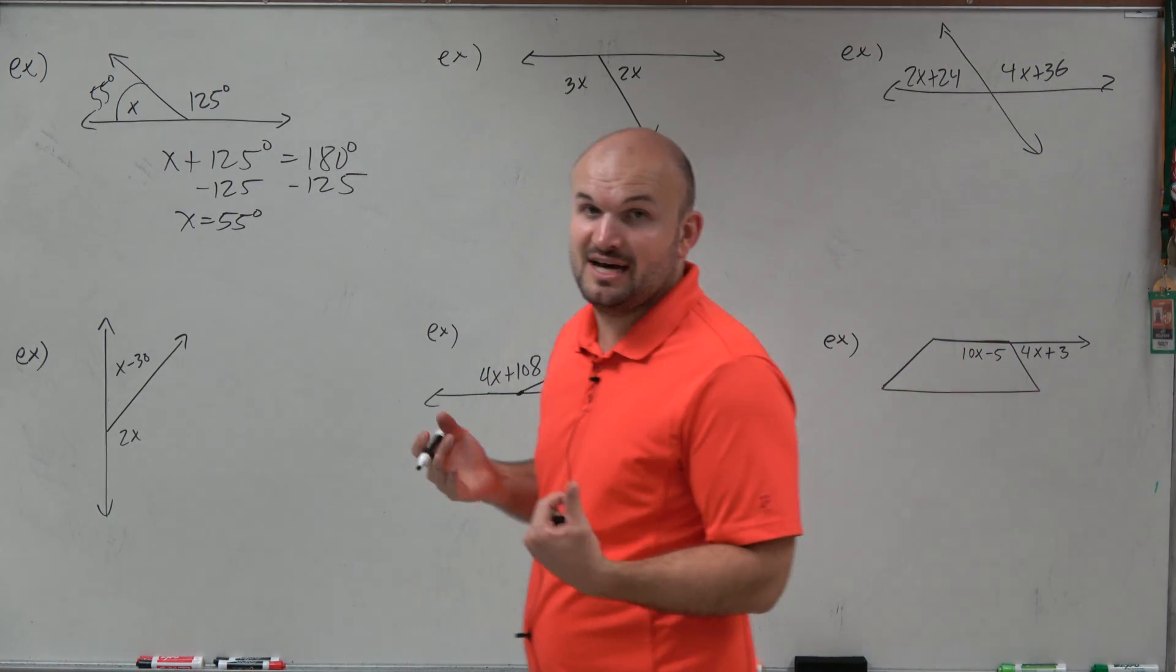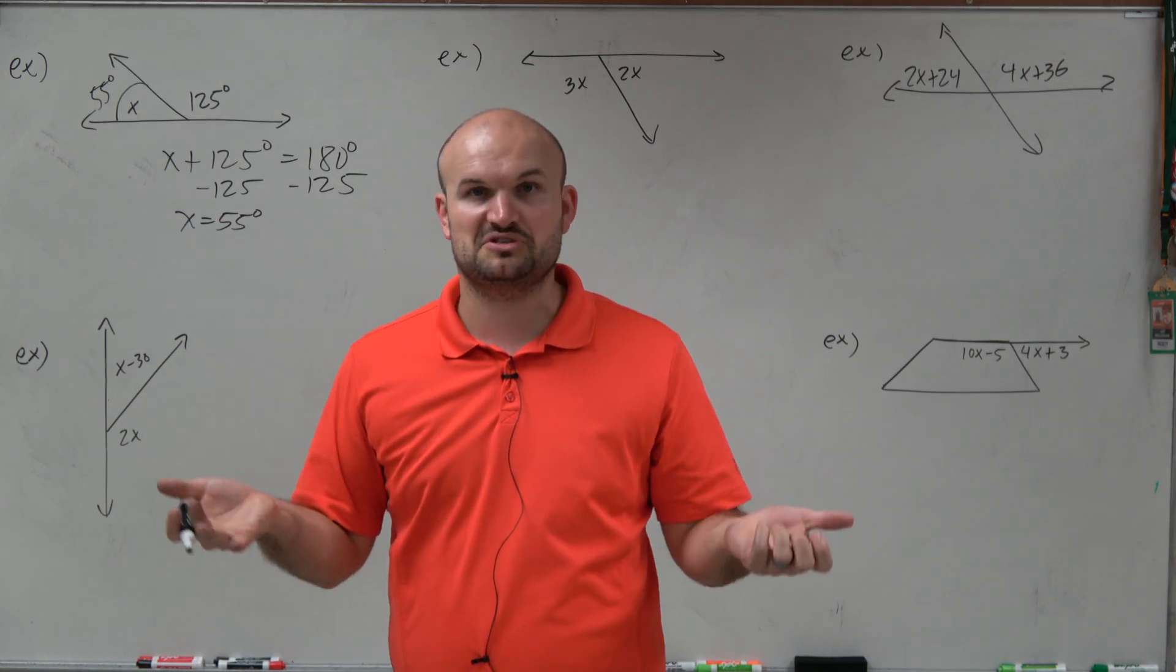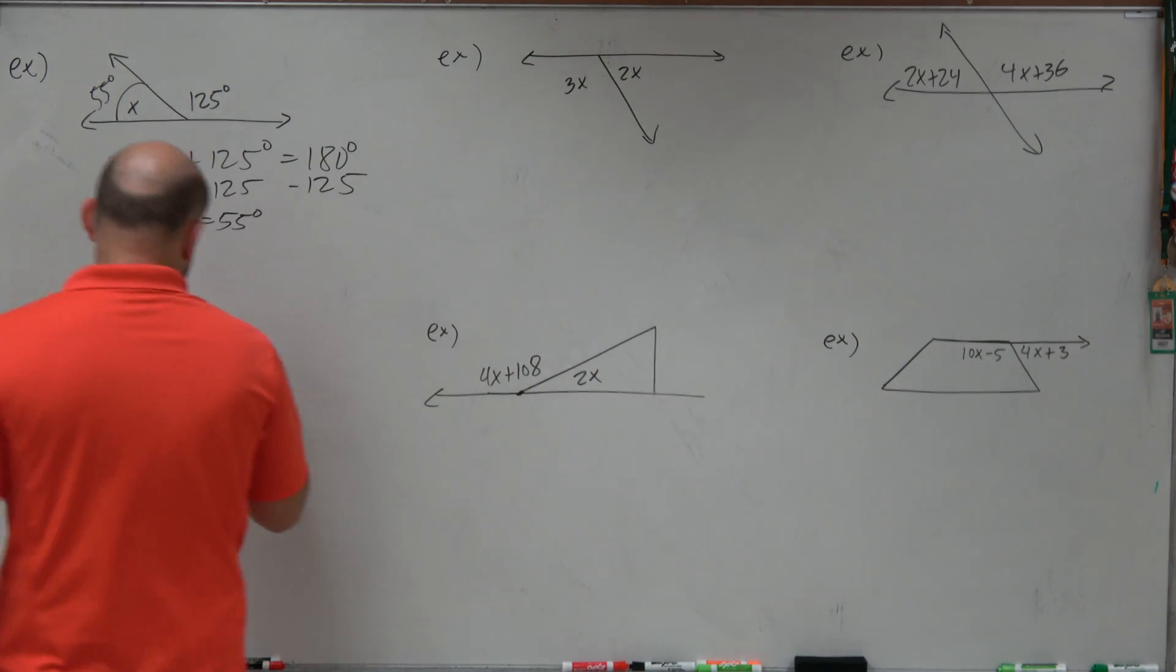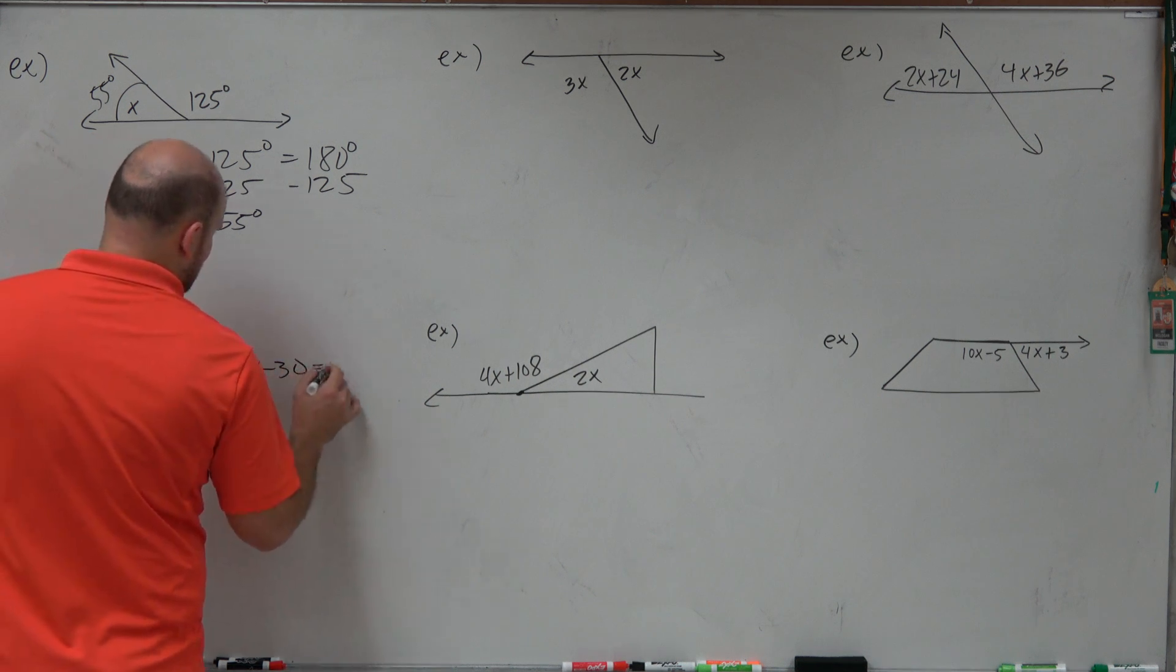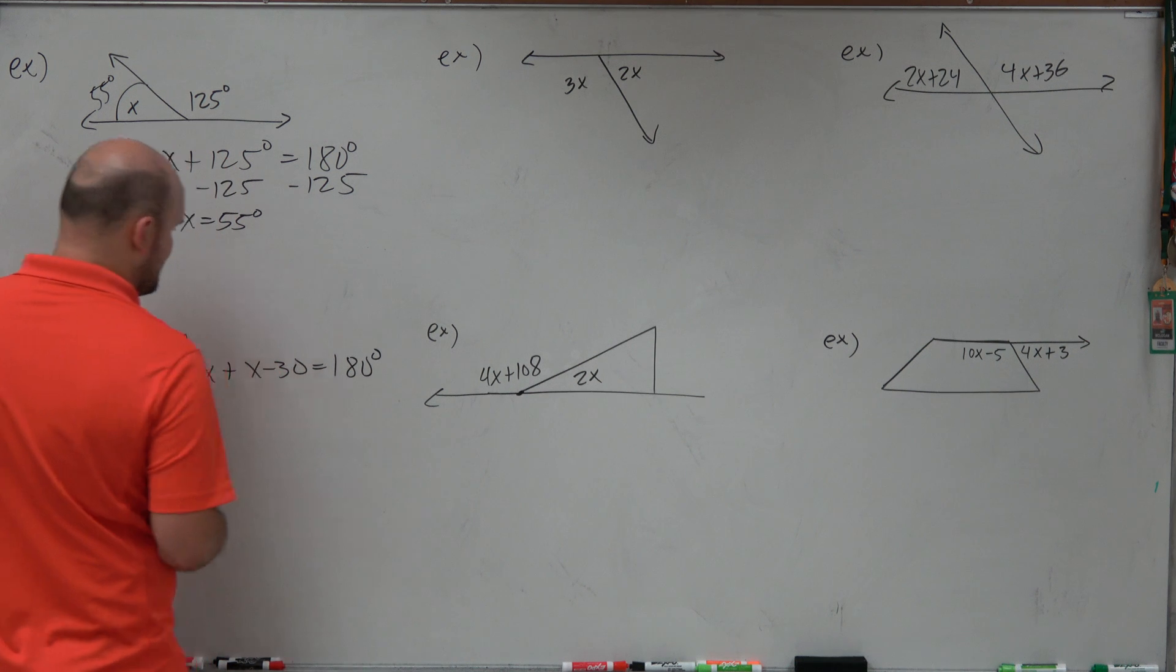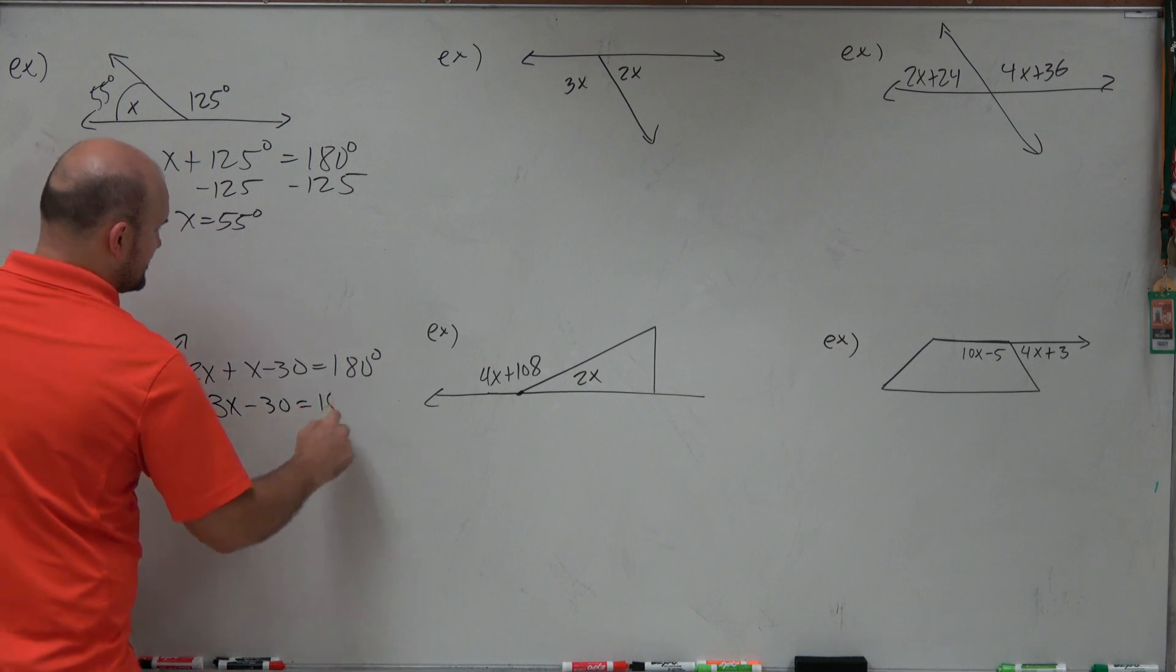The next one, again, you can see I have a line. But this time, it's a vertical line. So it doesn't matter if it's horizontal or vertical, still fine. So therefore, now I can set up an equation here. I could say 2x plus x minus 30 is equal to 180 degrees. Now, I can combine my like terms. 2x plus x is 3x minus 30 equals 180 degrees.